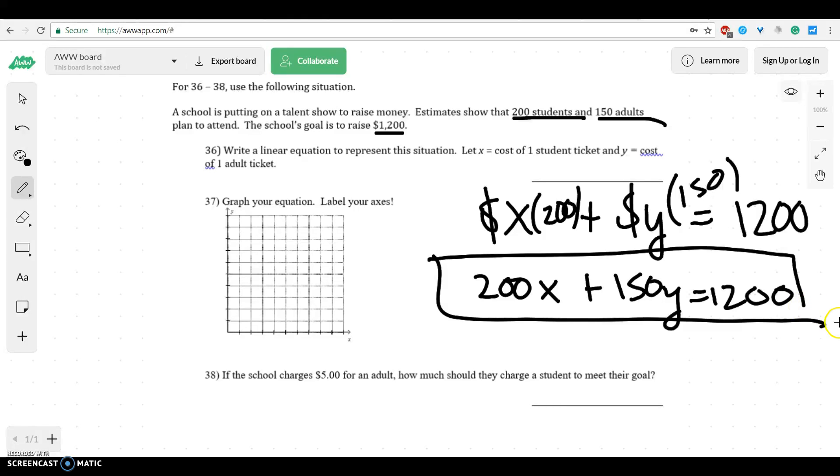Now you might go, oh man, we're going to have to change these different things to be able to graph it, because we don't have a slope and a y-intercept. Well, that's not exactly true, because we can find two points by using our cover-up method.